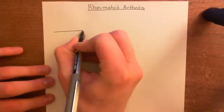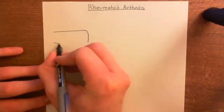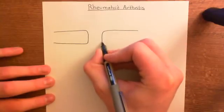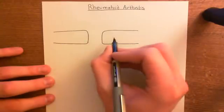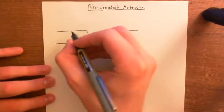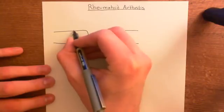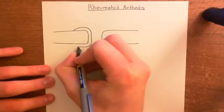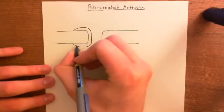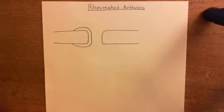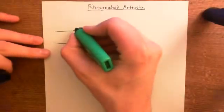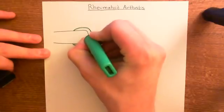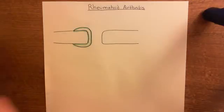A synovial joint is fundamentally a joint — a place where two bones come together. The first thing to say about synovial joints is that the terminal ends of these bones do not articulate with one another directly. Instead, they have a layer of cartilage — mainly hyaline cartilage — that covers the surface of the bones.